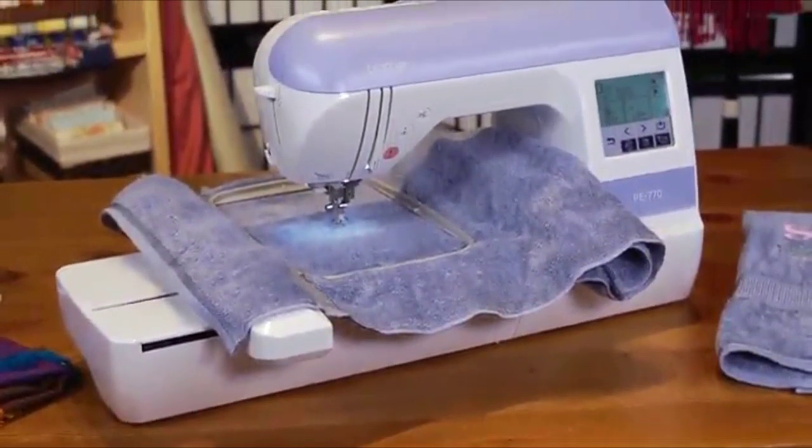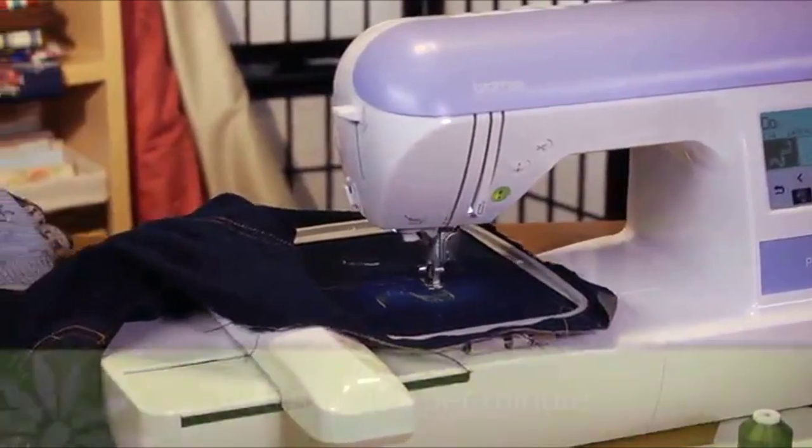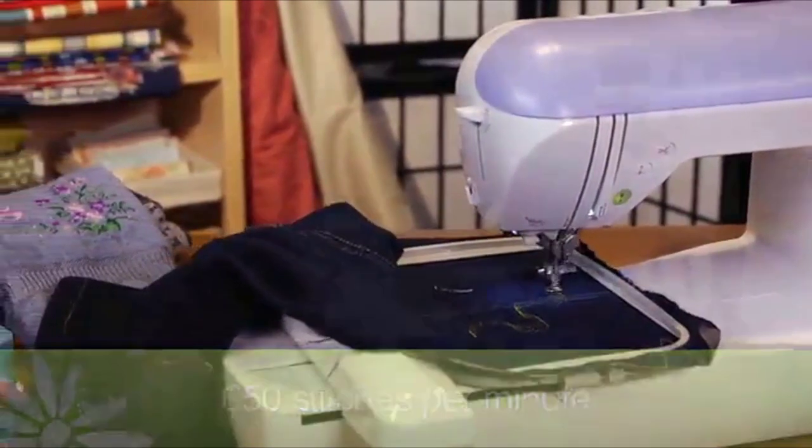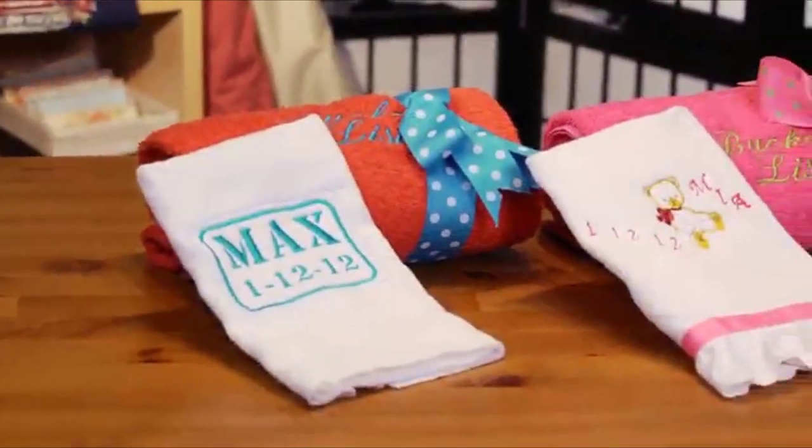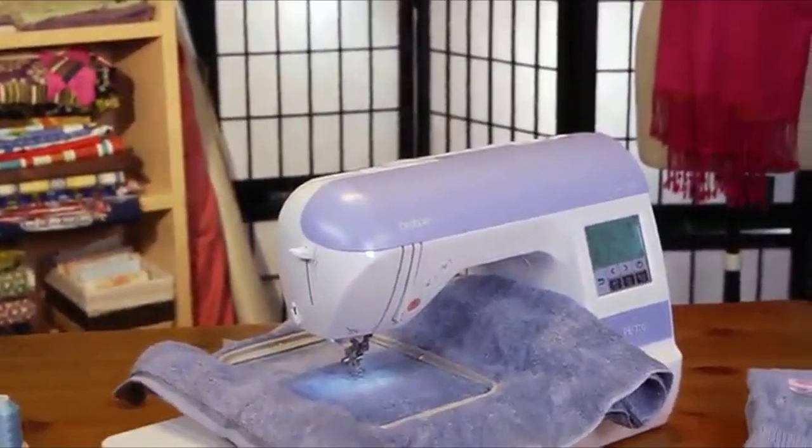With all of the features of the PE-770, you'll probably want to use it all the time to make as many creations as possible. Luckily, the machine stitches at a speedy 650 stitches per minute, so you can complete more designs faster. Whether you're making home decor items or embellishing clothing, the computerized PE-770 is the machine for you.